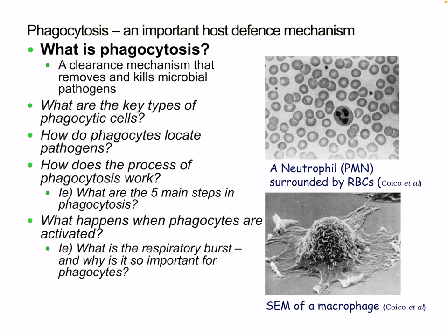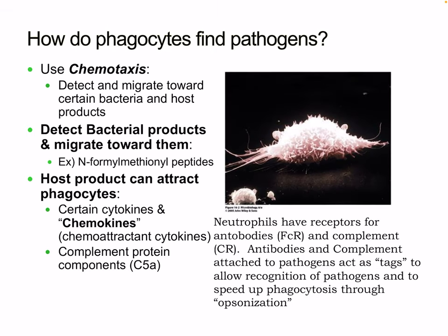Phagocytosis is an important host defense mechanism — the clearance mechanism that removes and kills microbial pathogens. The key phagocytic cell types are macrophages and neutrophils, with neutrophils being most important in the acute response. To find pathogens, phagocytes use chemotaxis, which allows them to detect and migrate toward bacteria and host products. Chemotactic factors attract cells to the site of infection.